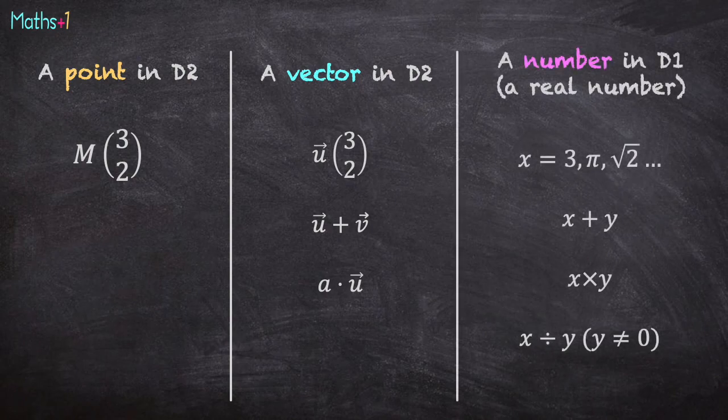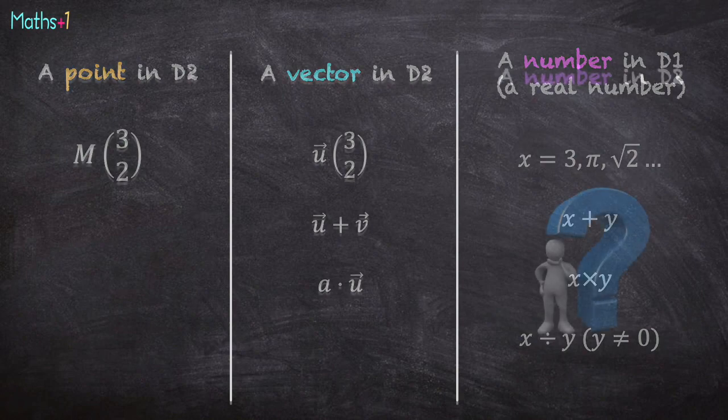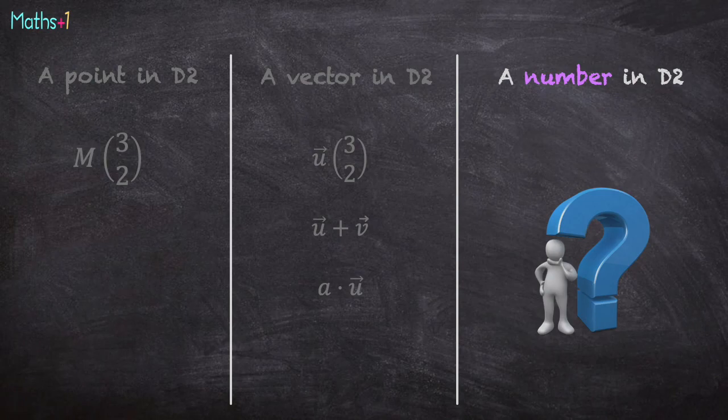A number in dimension 1 is the real number, for instance 3 or pi. You can add two numbers, multiply two numbers, and you can divide a number by another which is not null. But a number in dimension 2, what is it?